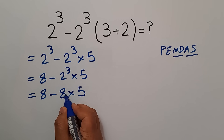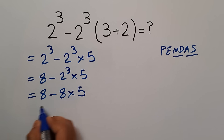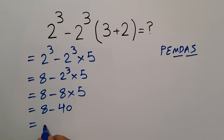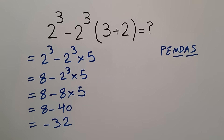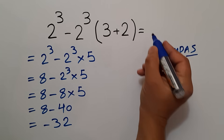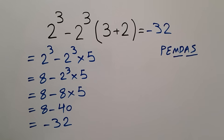Remember that multiplication has higher priority than subtraction, so first we handle this multiplication: 8 times 5 gives us 40. Then 8 minus 40, which equals negative 32. So our final answer to this problem is negative 32.